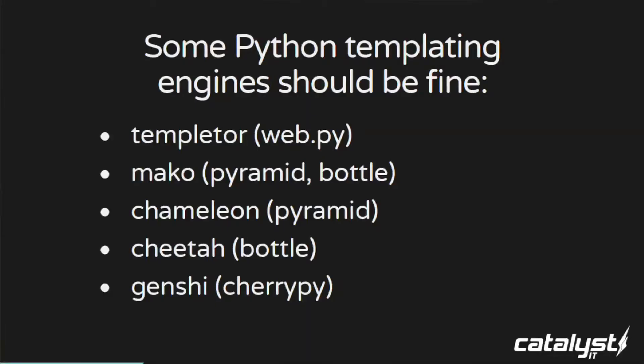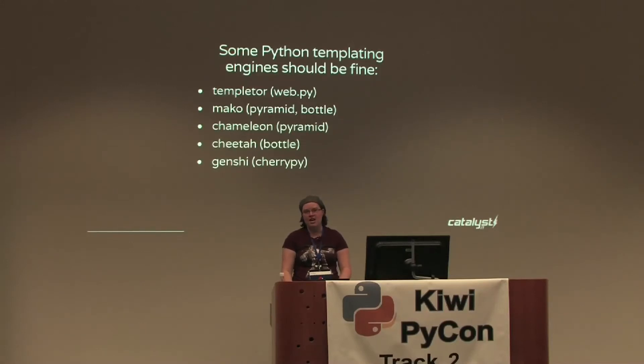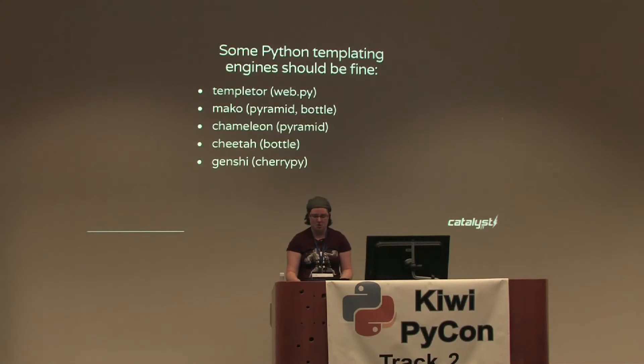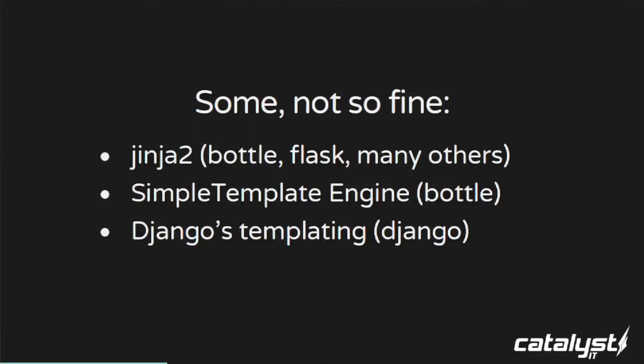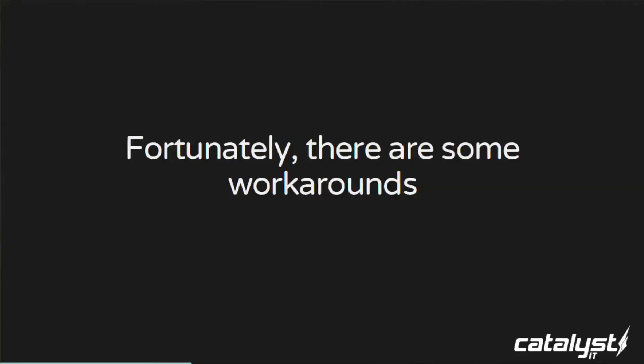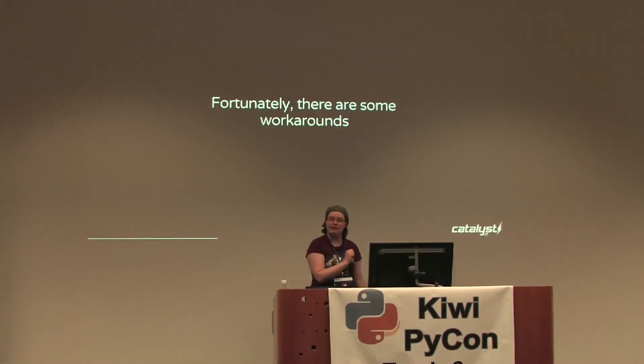That won't happen all the time. Templating engines like Mako and Chameleon use a dollar-sign single-curly-brace pattern, so you won't have any issues there — although I personally find those quite ugly. However, some of the big gorillas are not going to be fine: Jinja2 uses curly braces, Django's templating uses double curly braces, and Bottle's simple template engine does too. Unfortunately I hit a brick wall with Bottle's simple template engine — just don't use it, it's not sophisticated enough. Fortunately, Bottle does let you plug in other templating engines fairly trivially.